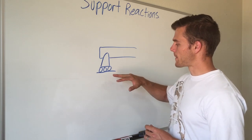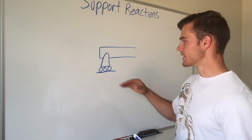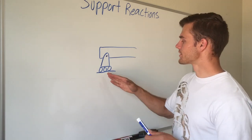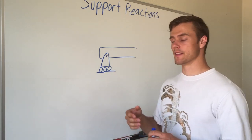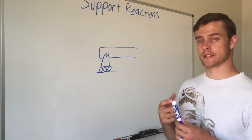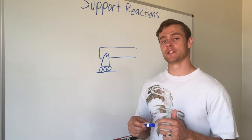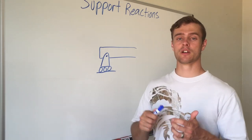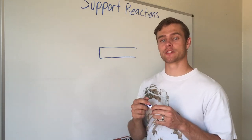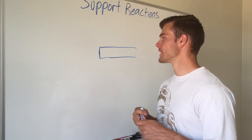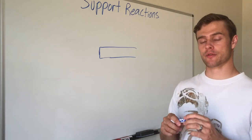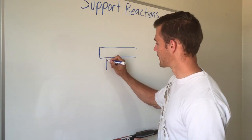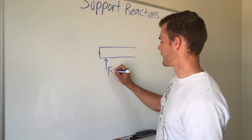A roller support allows the beam to move in the direction parallel to the surface it's rolling on, but prevents movement perpendicular to that surface. Roller supports are almost always pinned as well, so they don't resist rotation. If you replace a roller support with a reaction force, that force can only be in the direction perpendicular to the surface — in this case, a force in the y direction.